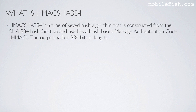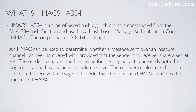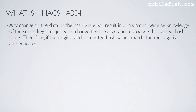In the demo I'm using HMAC SHA-384. HMAC SHA-384 is a type of key hash algorithm constructed from the SHA-384 hash function and used as a hash-based message authentication code. The output hash is 384 bits in length. An HMAC can be used to determine whether a message sent over an insecure channel has been tampered with, provided the sender and receiver share a secret key. The sender computes the hash value for the original data and sends both together. The receiver recalculates the hash value and checks that the computed HMAC matches the transmitted HMAC. Any change to the data or hash value will result in a mismatch, and if the original and computed hash values match, the message is authenticated.